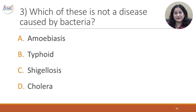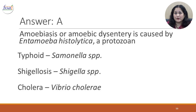Question 3: Which of these is not a disease caused by bacteria? A. Amoebiasis. B. Typhoid. C. Shigellosis. D. Cholera. The correct answer is A. Amoebiasis or amoebic dysentery is caused by Entamoeba histolytica, which is a protozoa. Typhoid is caused by Salmonella species, Shigellosis by Shigella species, and Cholera by Vibrio cholerae, which are all bacteria.